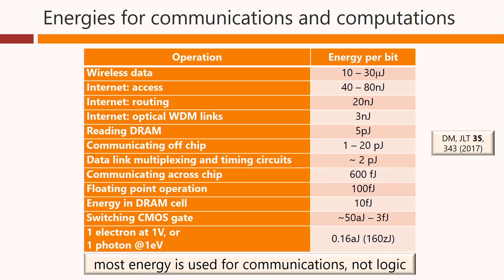This table shows the energies per bit for many different operations in handling information — all the way from long-distance communications down to the energies required for logic operations in a gate, which are on the scale of a femtojoule. Communicating off-chip takes picojoules to possibly tens of picojoules per bit. Data multiplexing and timing circuits take picojoules per bit. A complicated logic operation such as a floating-point multiplication consumes only about 100 femtojoules per bit. The dominant point is that most energy is used for communications, not logic.